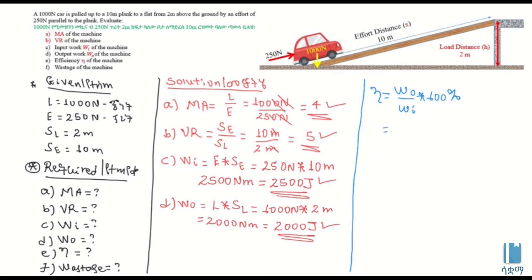Now we have the calculation across the values, which gives a number. The number comes out to be 80% — that is 80% of our total efficiency value.